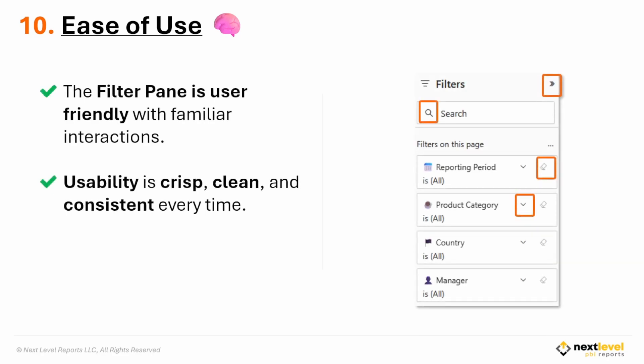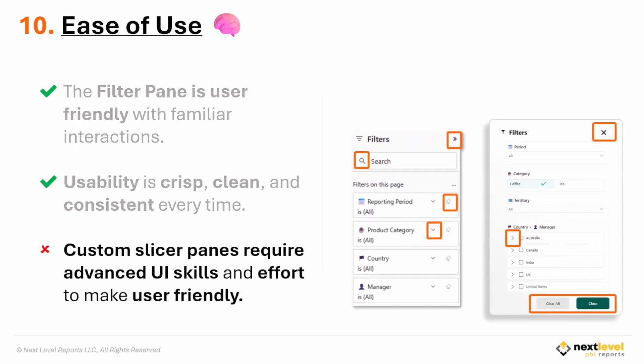And reason number ten: ease of use. The filter pane is extremely user-friendly and intuitive. It follows familiar UI patterns — filters use simple drop-downs, there's built-in search, there are icons, the interactions are predictable, and they stay consistent. Custom slicer panes can be made user-friendly, but they require a lot more design effort upfront and user education.